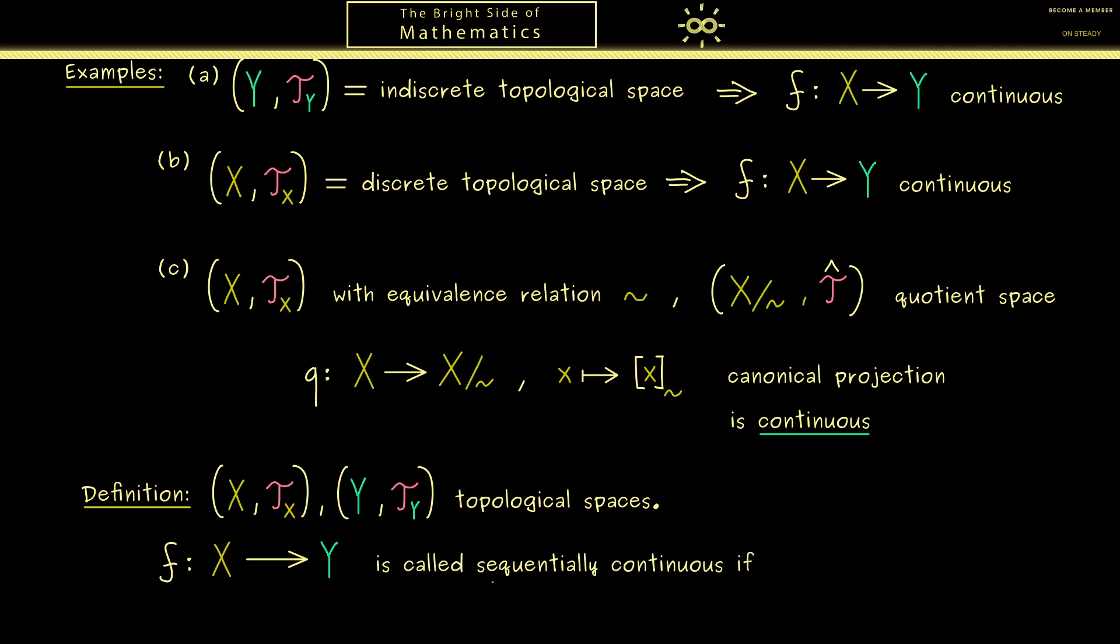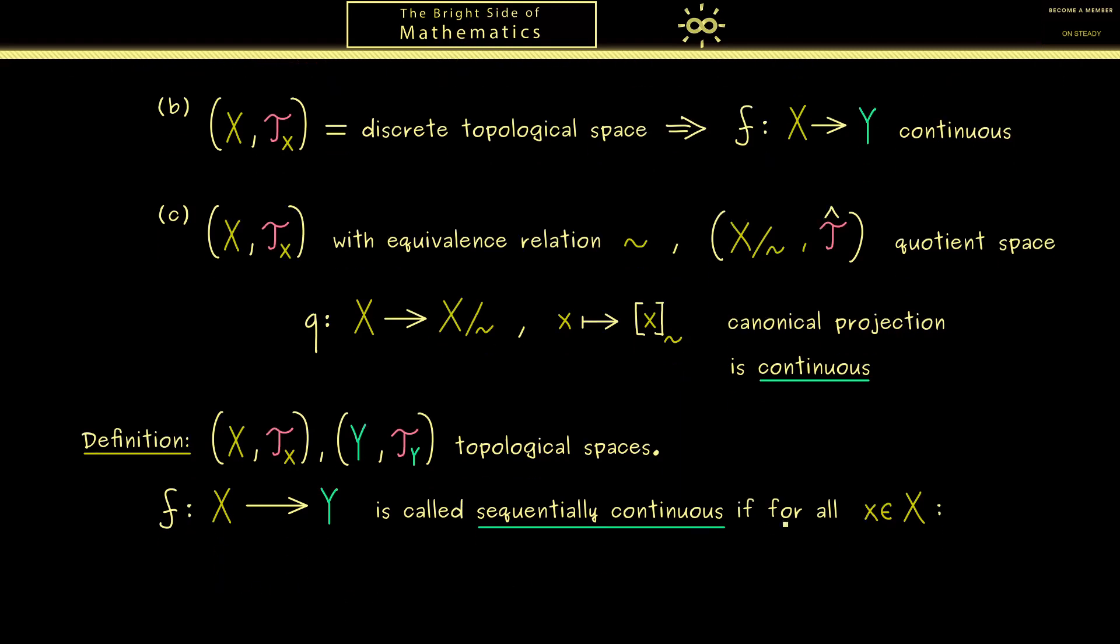Therefore we can do the same as in metric spaces or as in R and define the term sequentially continuous. And also this definition we can immediately formulate globally, so we take all points x in X. And then we just look at any sequence that converges to this point x. So let's call the sequence x_n and it should converge to x when n goes to infinity.